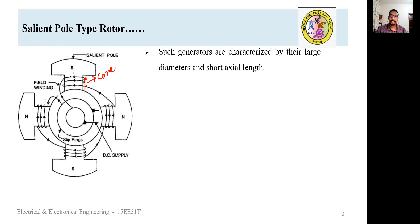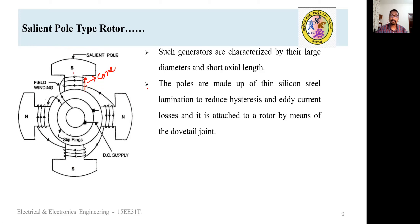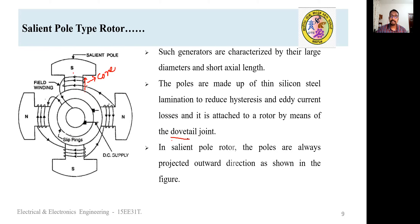Such generators are characterized by their large diameter and short axial length. The poles are made up of thin laminations of silicon steel — silicon steel to reduce hysteresis loss, and thin laminations to reduce eddy current loss. These salient poles are attached to the heavy magnetic drum with the help of a dovetail joint.